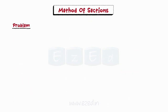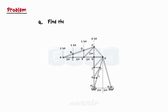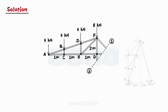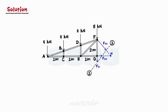Let us now consider this problem. Consider the stadium truss shown alongside. Find the force in members FH, GI, and GH of the stadium truss. In this example, we have to find forces in only three members. We will take cutting section 1-1 passing through the unknown members FH, GI, and GH. Let us take the left-hand side part of the truss, as this will avoid finding the hinge reaction. We draw the FBD of the left-hand side part. The angle GFH is equal to 45 degrees as sides FG and GH are equal in length, and hence right-angle triangle FGH is a 45-45-90 triangle.